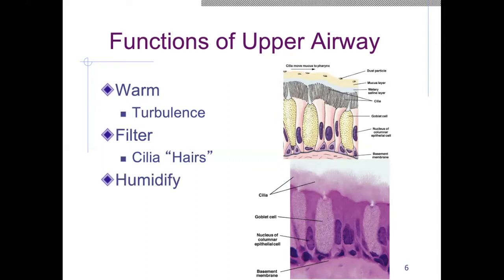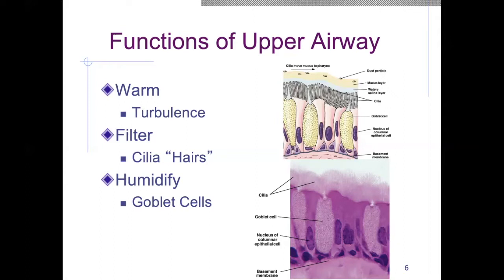The third function of the upper airway system is to humidify the air. Air is typically warm and wet inside the lungs. Think about the last time you blew on a piece of glass and saw it fog up — that's the combined heat and moisture absorbed into the air as it travels down into the lungs. This is accomplished through goblet cells, which produce fluid that releases into the nasal passage to add moisture to the air. So our three functions are: warm, filter, and humidify the air before it reaches the lungs.